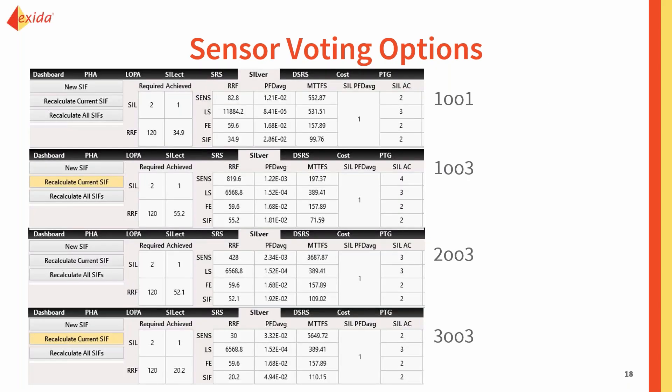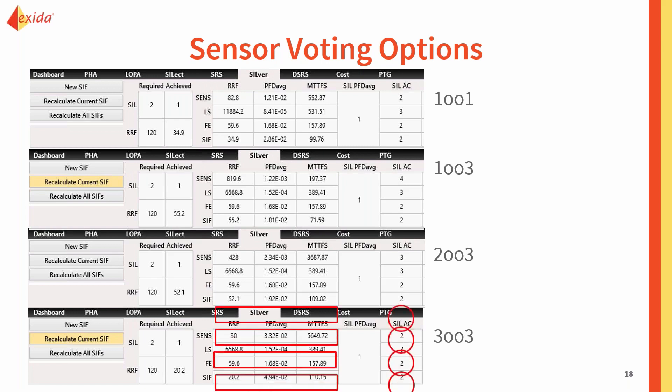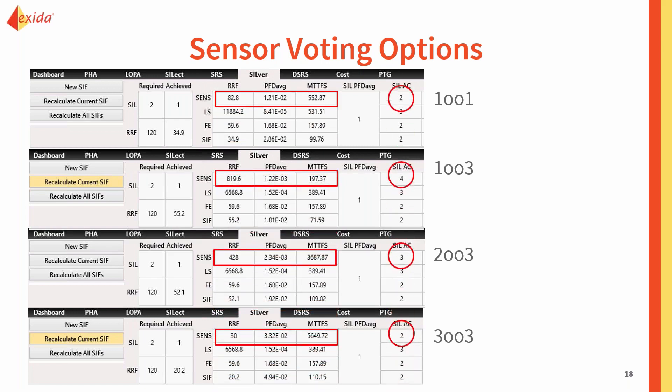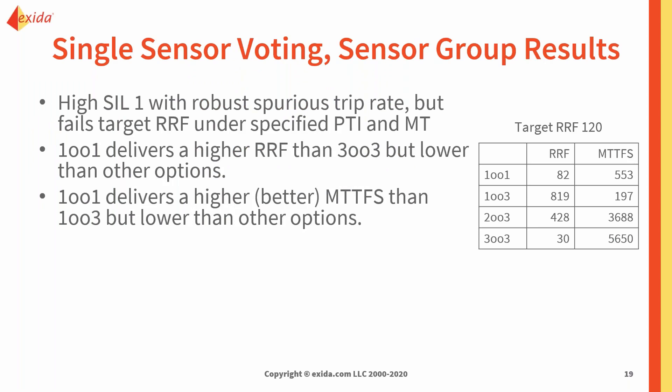I've done a set of calculations with different voting. These are screen clips showing the results. On the sensor side, we looked at one out of one, and if we go with redundancy, we ran calculations for one out of three, two out of three, and three out of three. From an architectural perspective, our sensor group meets the SIL 2 target, and our target for this SIF is a risk reduction factor of 120. I've taken these numbers and carried them forward into a table for analysis.